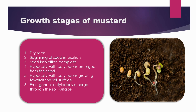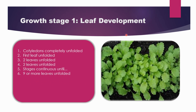This is the germination stage of the mustard. Coming to the next growth stage, that is the leaf development stage. Here you can see that the cotyledons are completely unfolded, and the first symptom in the leaf development is the first two leaves unfolded. The stage continues until nine or more leaves are unfolded. This is the leaf development stage.